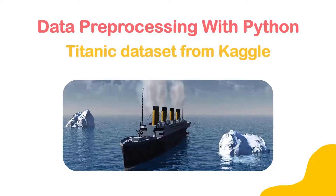In this video, I'm going to show you how to do data pre-processing using the Titanic dataset. You can get the Titanic dataset from the Kaggle website — it's available as open source there. First of all, we need to understand what data pre-processing is. Data pre-processing is a crucial step in any machine learning project. It involves cleaning and formatting data so that it can be used for analysis.